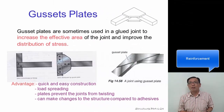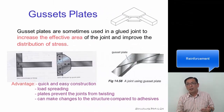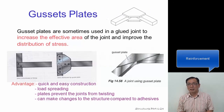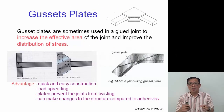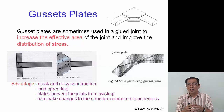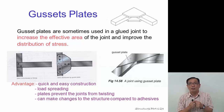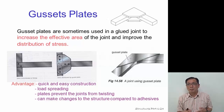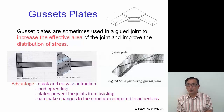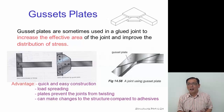Now we talk about reinforcement. We have gusset plates — a structure at the joint where we increase the effective surface area of the joint and distribute stress equally throughout the beams. The advantages are that they are quick and easy to construct, the load is spread, and the plates prevent the joint from twisting.